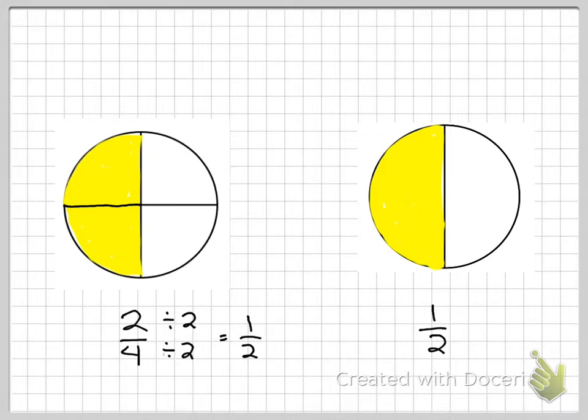If you think about it as pizza, if I ate two of these slices from this pizza, it would be exactly the same as if I ate this whole bit, this half of the pizza, assuming that they're the same size.